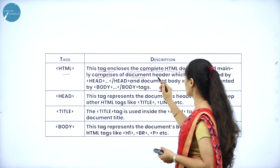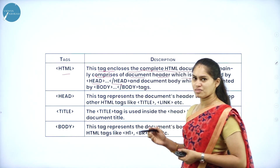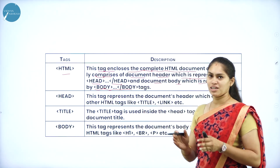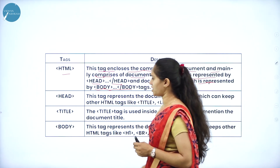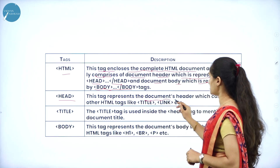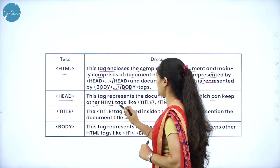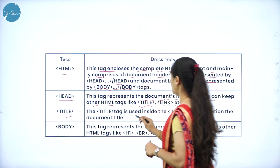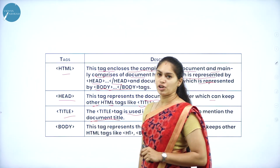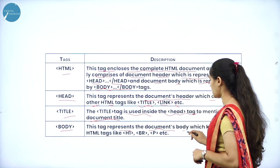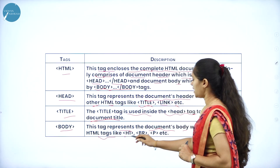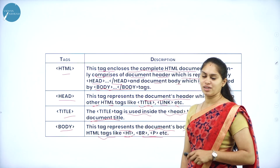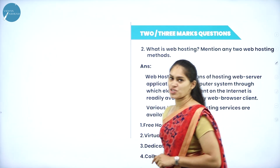The HTML tag encloses the complete HTML document and mainly comprises the document header, represented by the head tag, and the document body, represented by the body tag. The head tag represents the document header and can include tags like title, link, etc. The title tag is used inside the head tag to mention the document title. The body tag represents the complete document body and can include paragraph, break, and heading tags.